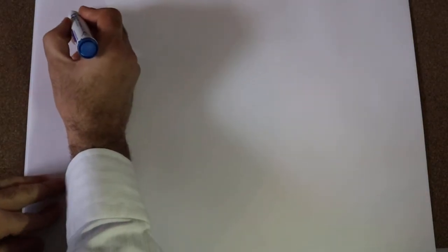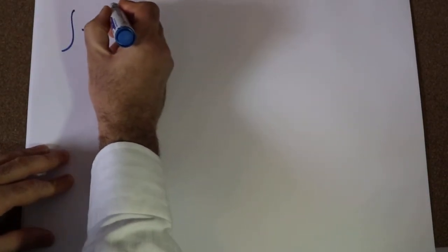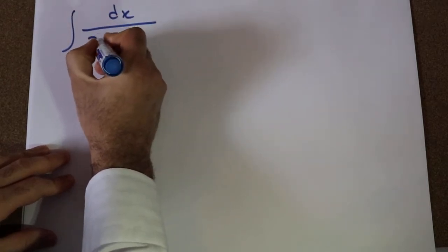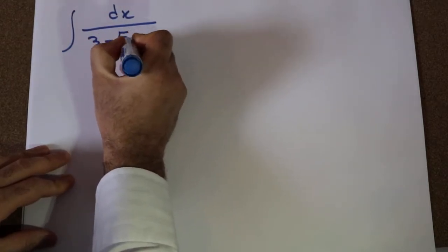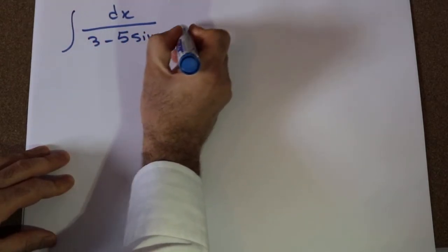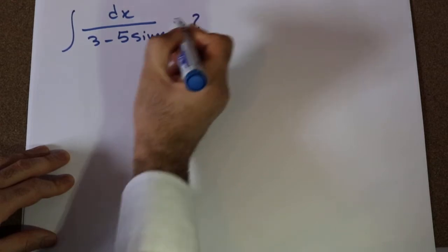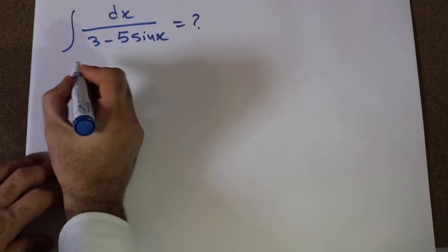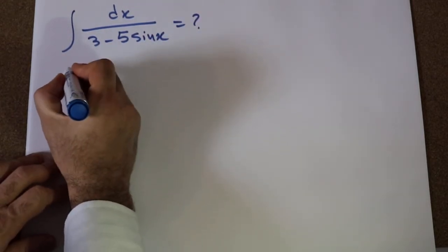Hi, today I'm going to show you how to calculate the integral of dx divided by 3 minus 5 sine x. You can solve this integral using the substitution rule.